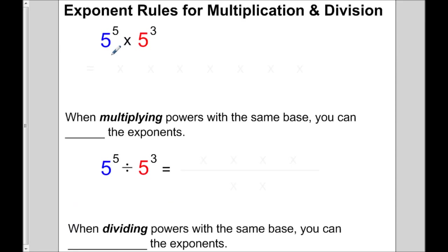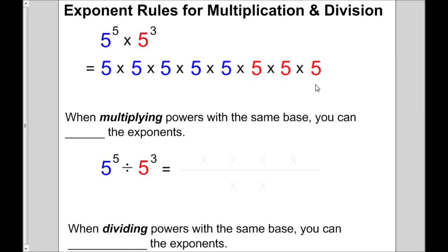We're going to simplify this expression: 5 to the 5 times 5 to the 3. Well, 5 to the 5 means 5 times 5 times 5 times 5 times 5 — there are 5 of them. And 5 to the 3 means 5 times 5 times 5, or 3 times. Since those two are multiplying, we have this long string of 5s. If you count, there are 8 of them. So we're multiplying 5 eight times, which is 5 to the 8.